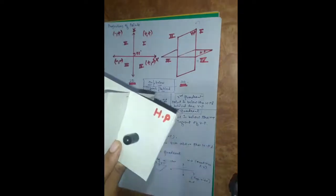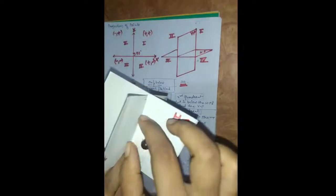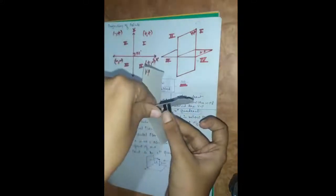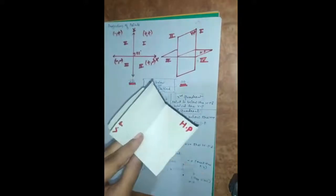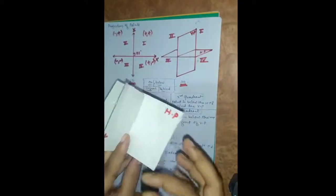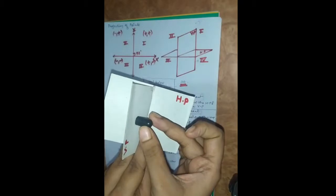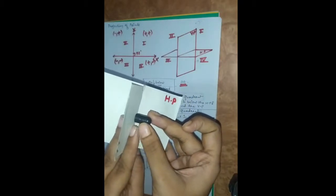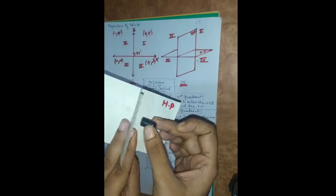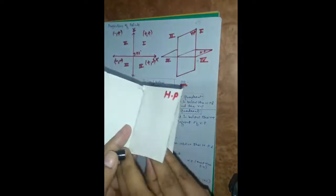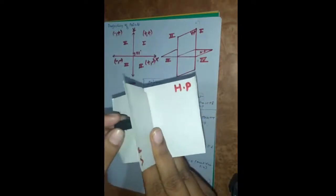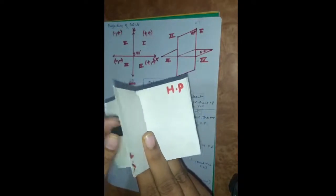If the point is behind the HP, we describe it accordingly. If it is behind the VP, we say the point is behind the VP.